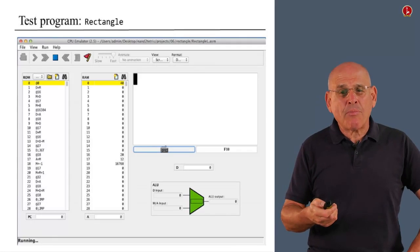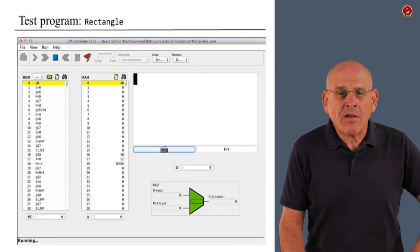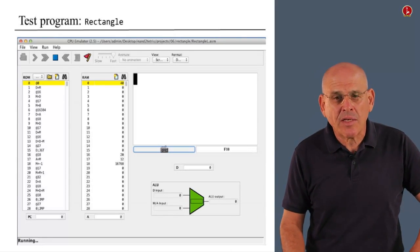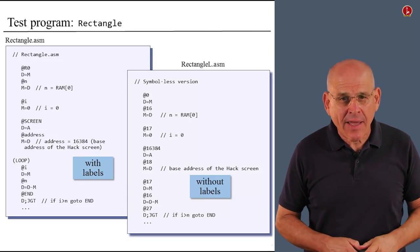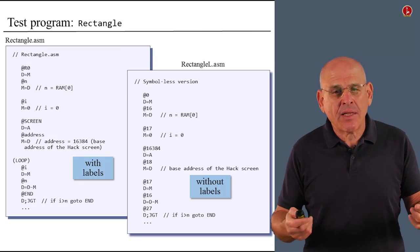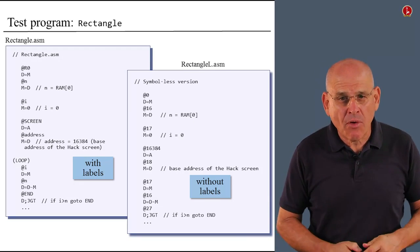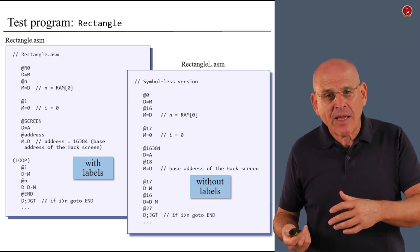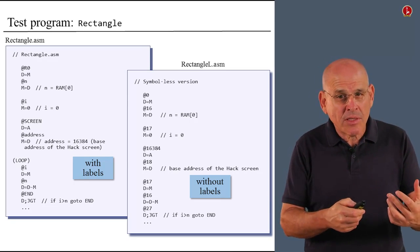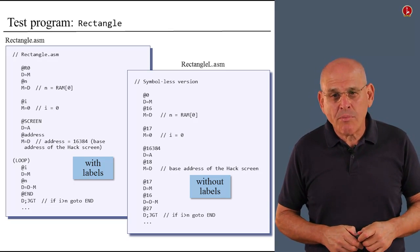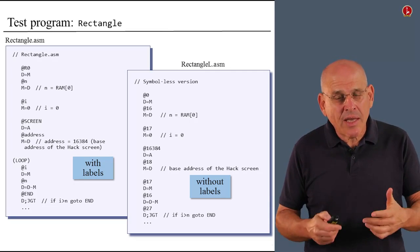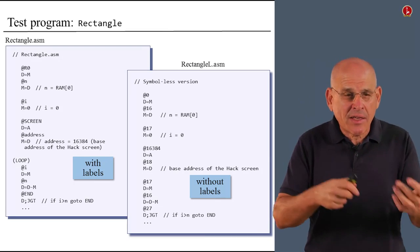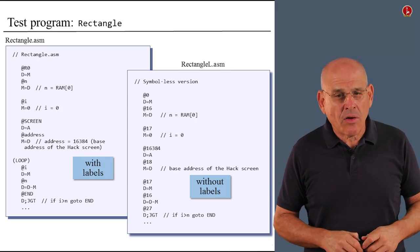In a very similar fashion, we provide a program called Rectangle, which draws a rectangle on the screen, as seen in a snapshot from the CPU emulator. We supply two different versions: on the left-hand side, the full version with symbols; on the right-hand side, the same program without symbols, where every symbol is replaced with its numeric meaning. When you write your basic assembler, test it on RectangleL first, and only later, when you write the full assembler, test it on Rectangle.asm.